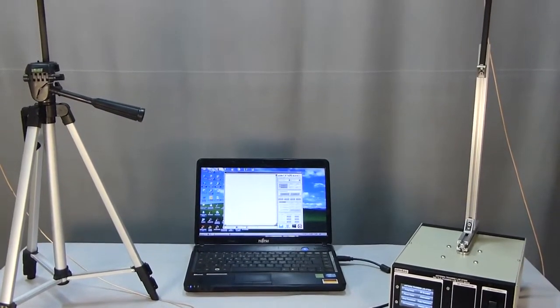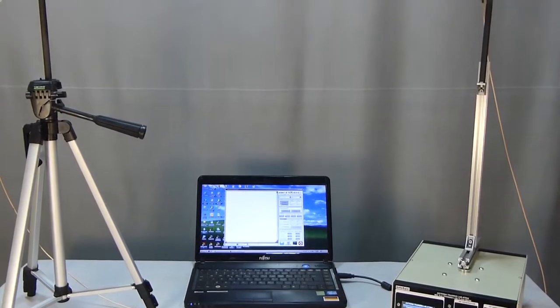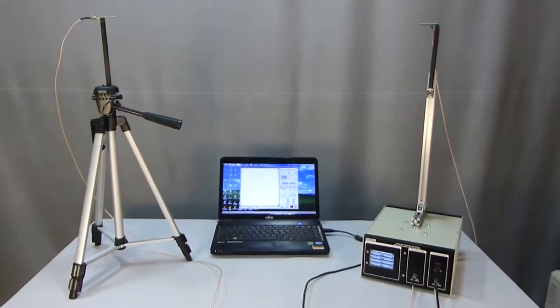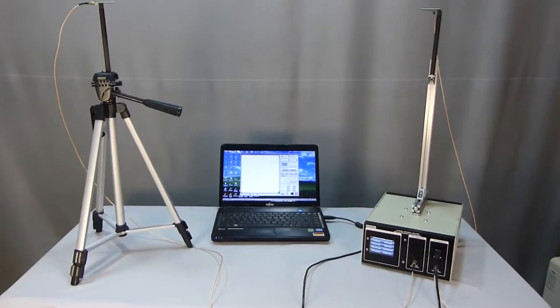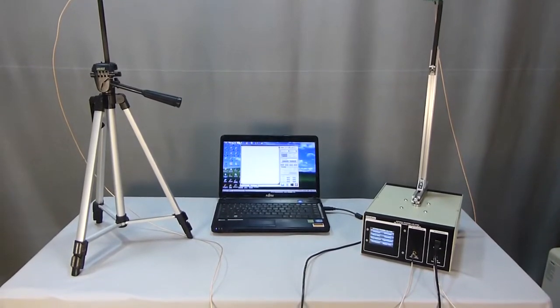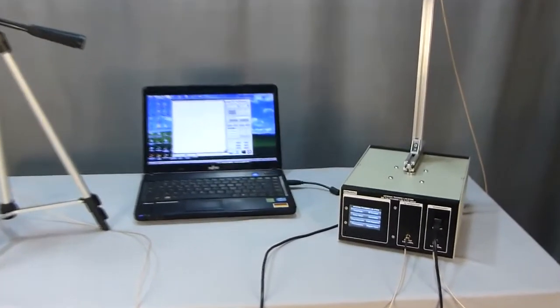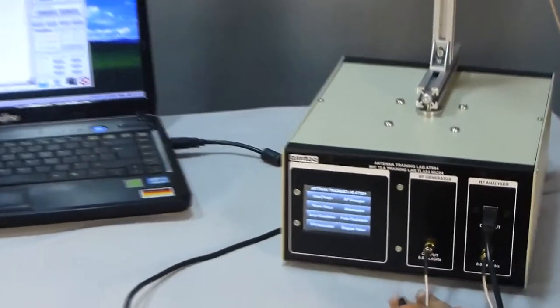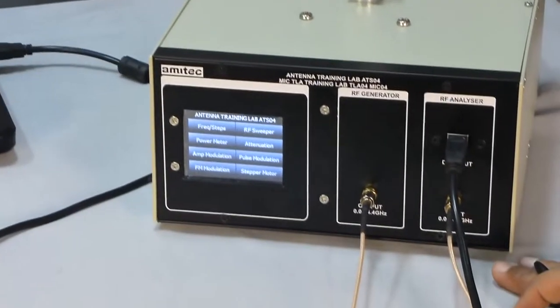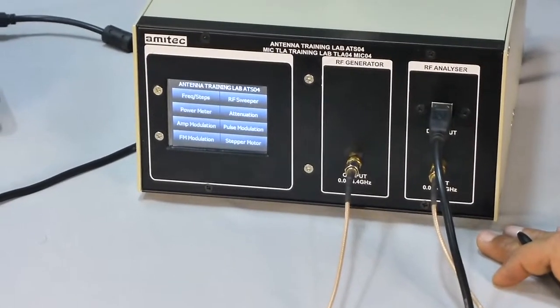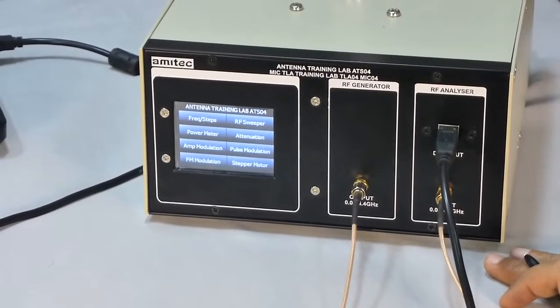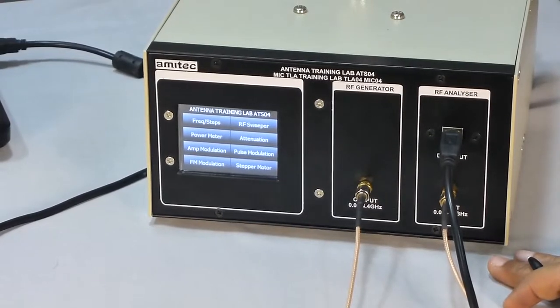This is the demo video of Amidec Antenna Clearing Lab ATS04 instrument which is used for taking polar plot of antennas in azimuth plane. On the front you can see a TFT touchscreen, an RF output and RF input connectors. This instrument is used for 0.04 to 4.4 GHz.